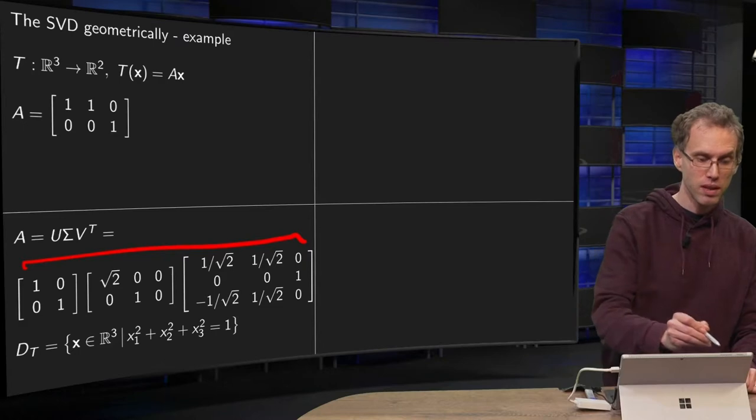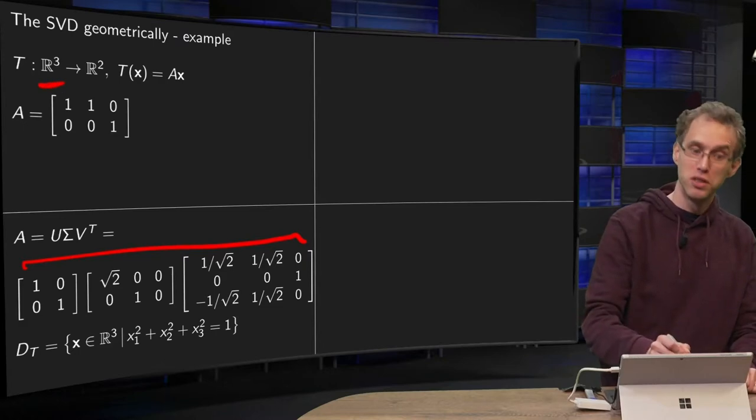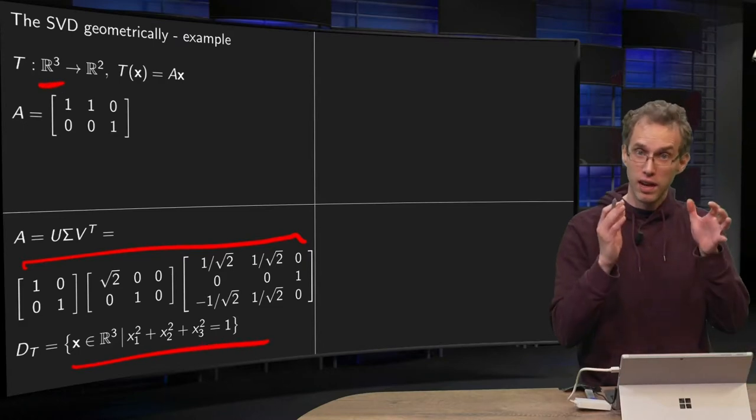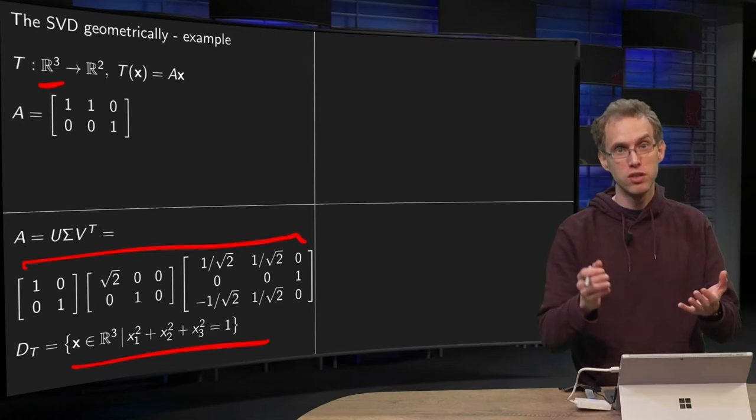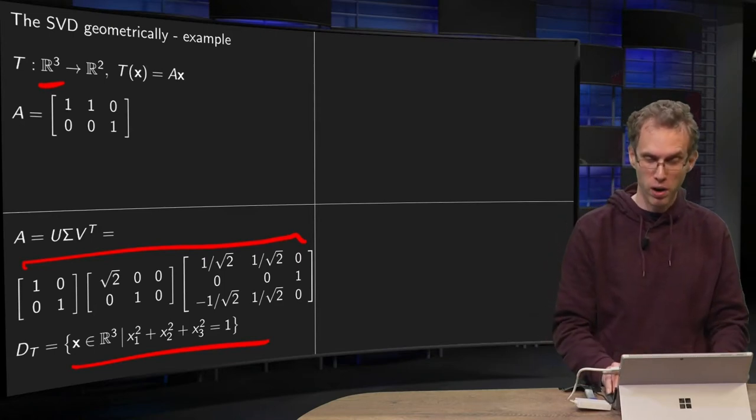Now we start in R³ with a unit sphere as our domain: x₁² + x₂² + x₃² = 1.